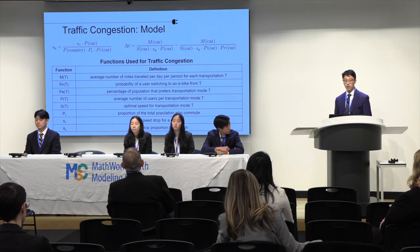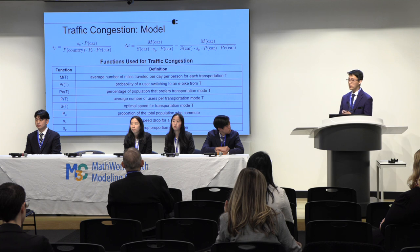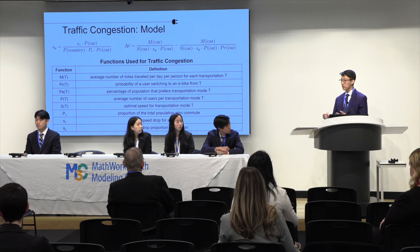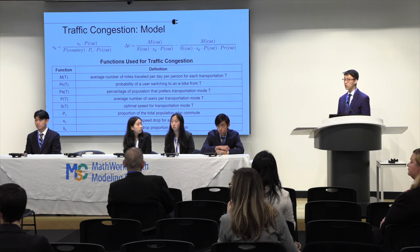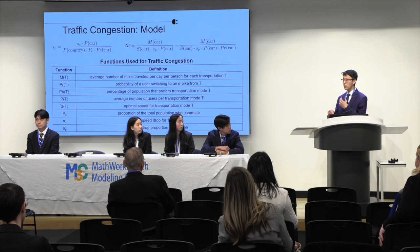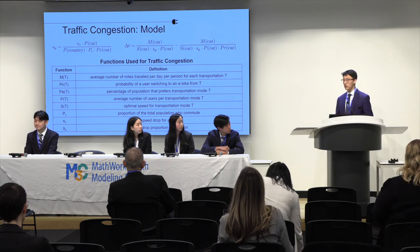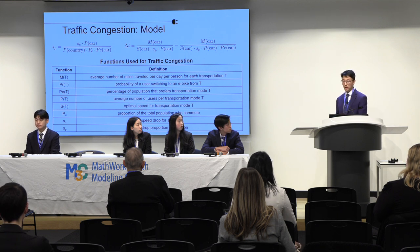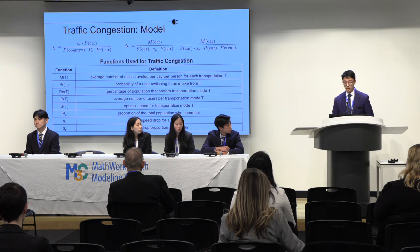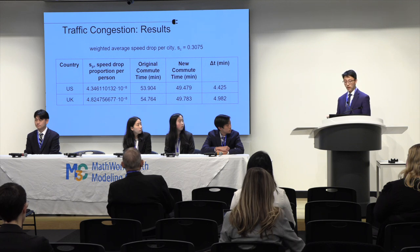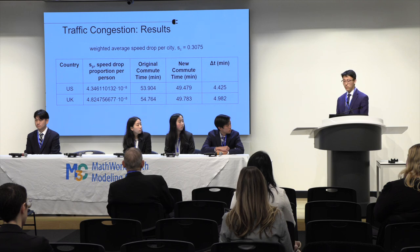Next, we modeled the effect of e-bikes on traffic congestion. When an area has a lot of traffic, you travel very slowly through it; with little traffic, you travel quickly. This difference in speed, which we denoted as the speed drop proportion per person, is used to quantify traffic congestion. By calculating this speed-flow proportion, we find the amount of time saved by switching from a car to an e-bike using the equation for delta T. As a result, we can save up to 4.4 minutes in traffic in the US and up to 5 minutes in the UK by switching to an e-bike from a car.